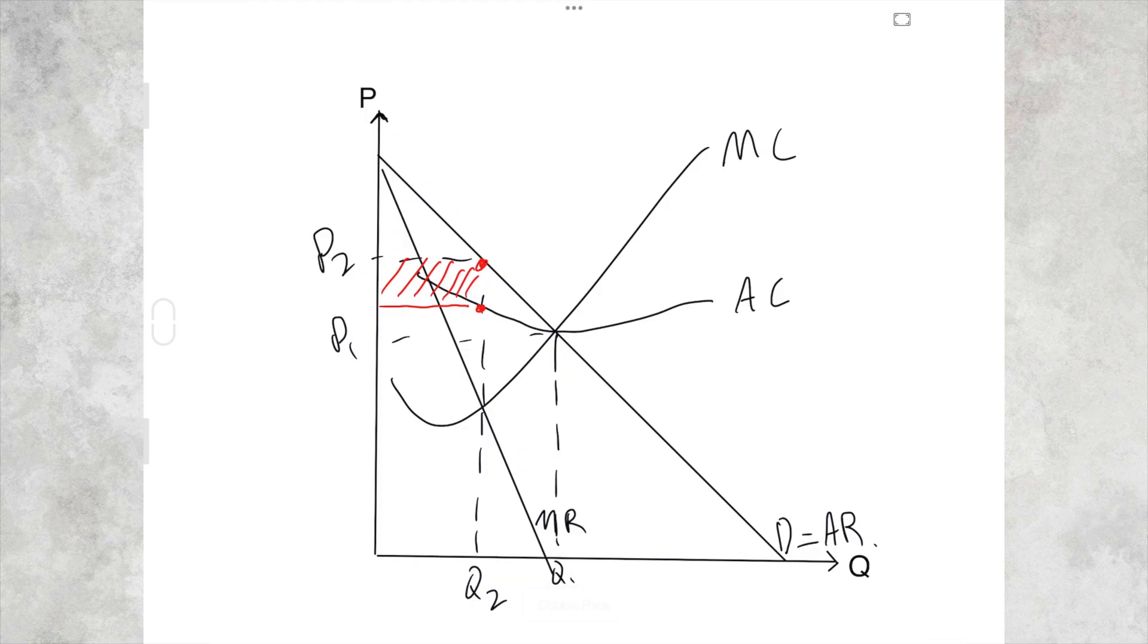The difference between AR and AC. Also we can show the area of deadweight welfare loss. Deadweight welfare loss is the combined decline in consumer and producer surplus. So by producing less, setting a higher price, there's this decline in consumer surplus which is not captured by the monopoly. There's also this decline in the producer surplus which is not captured by the monopoly. So because a monopoly sets a high price, restricts output, this area is lost to society.